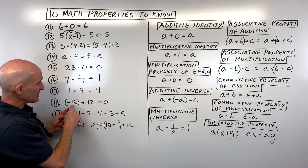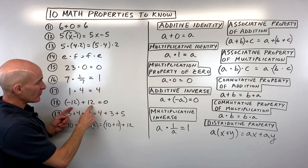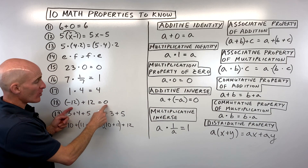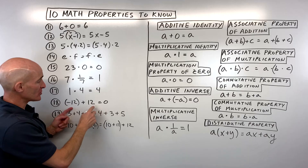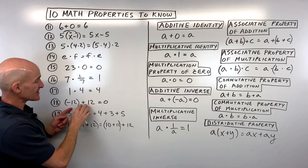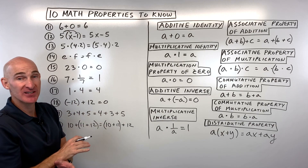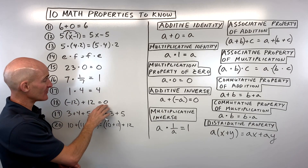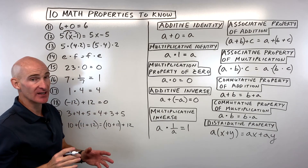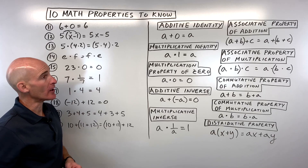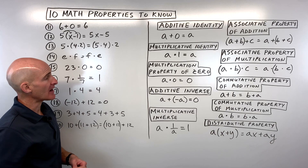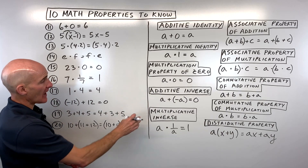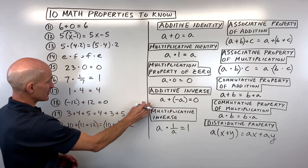Number 18: negative 12 plus positive 12 equals zero. A number plus the same number with the opposite sign gives you zero — they undo one another. That's called the additive inverse.